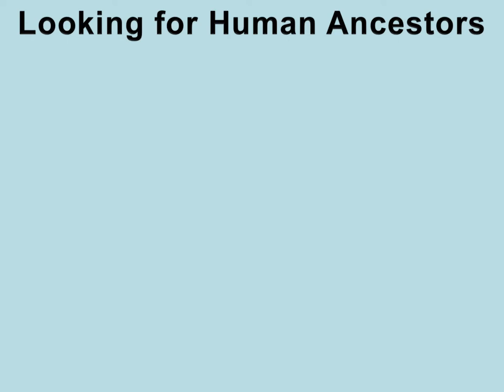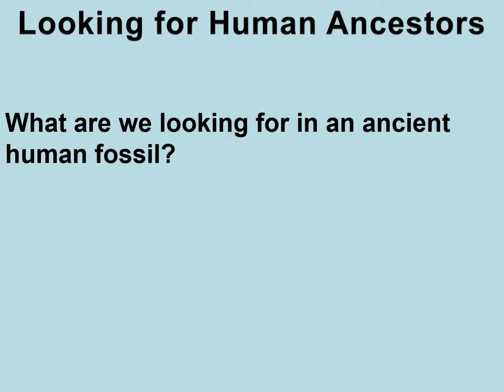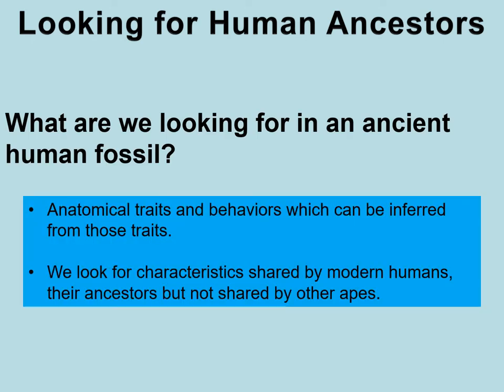When we find a potential candidate for an ancient human ancestor in the fossil record, we're looking for anatomical traits and behaviors that can be inferred from those traits. We look for characteristics shared by modern humans and their direct ancestors — all the way back to Homo erectus — but not shared by other apes or other fossil apes.